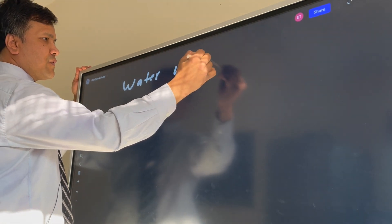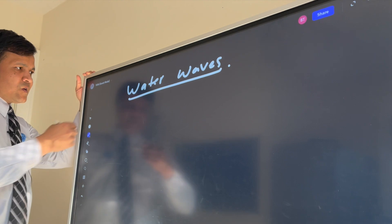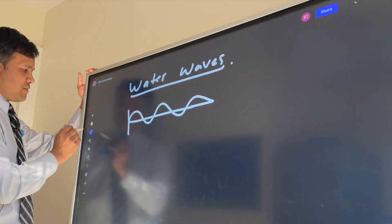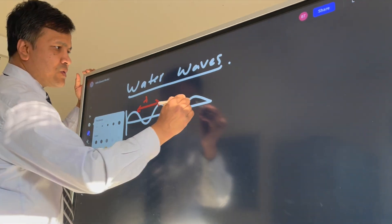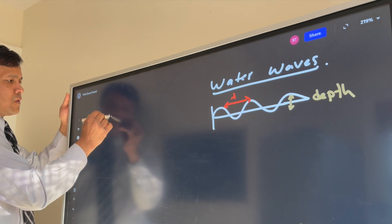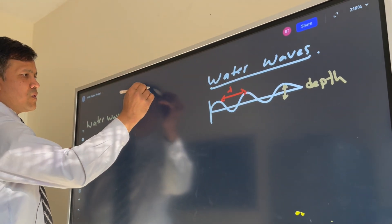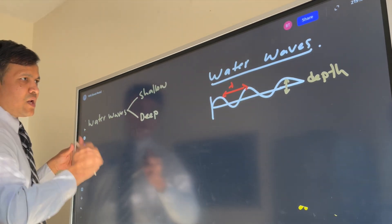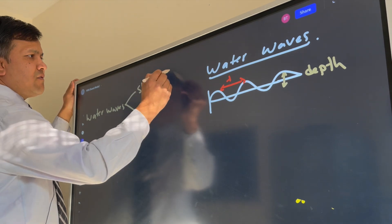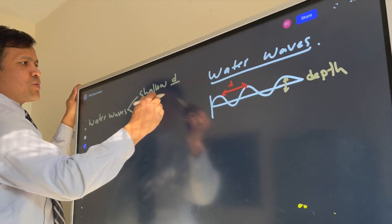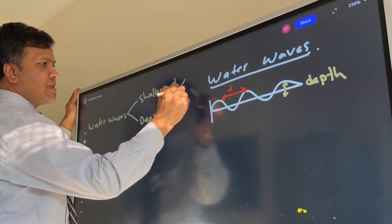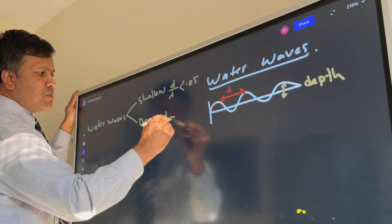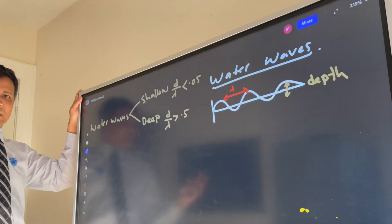Water waves are an example of a transverse wave. This is how the water will look like, with wavelength (λ) and depth (d) labeled. Water waves are actually of two types: shallow water and deep water. For shallow water, when d/λ is less than 0.05, we consider it shallow. When d/λ is more than 0.5, we call it deep water.